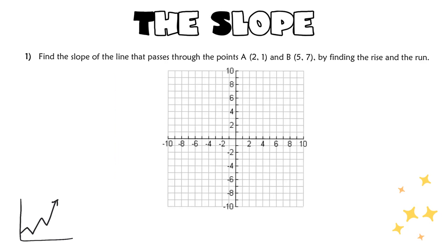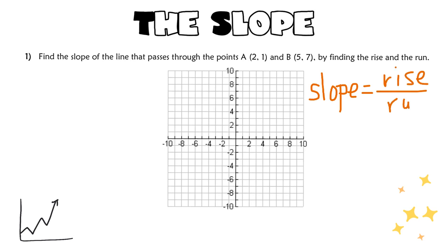We're going to begin our topic of the slope of a line by reviewing a concept you've probably learned in middle school. The idea is that when talking about the slope of a line, you can calculate the numerical value of the slope by considering the rise over the run. So it says: find the slope of the line that passes through point A (2, 1) and point B (5, 7) by finding the rise over the run.